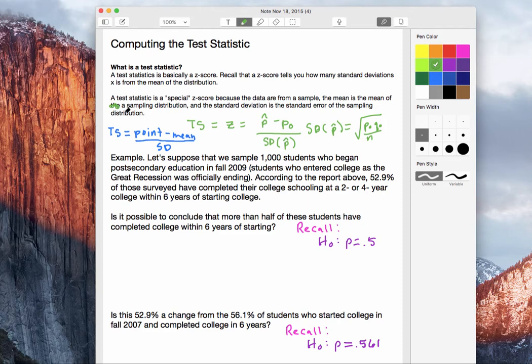If I were to write out a general formula for a test statistic, it would look like this: point estimate minus mean divided by standard deviation. Now all these little words right here would change because a point estimate could be a sample mean, could be a sample proportion, could be a sample standard deviation. The mean could be the mean of the distribution, whatever that distribution is. Is it a distribution of proportions? Is it a distribution of means? And same thing with the standard deviation.